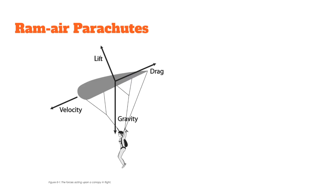If you were to measure the line groups, we've got A lines, B lines, C lines, D lines, and brake lines. You'll find that the C lines are shorter than the D lines, the B lines shorter than the C lines, and the A lines are the shortest of all. Depending on which parachute you jump, the trim angle — that tilt a manufacturer has built into their wing — can vary quite a bit. In the end, it's the weight, you and your gear, your exit weight, that pulls the wing down and forward.